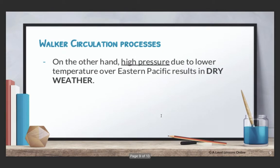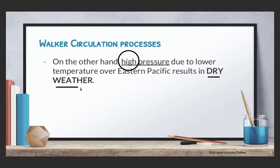On the other hand, as for the eastern Pacific, there's actually high pressure. High pressure is there because there is low temperature, and this low temperature is because of the cold ocean currents. This results in dry weather — high pressure is always associated with dry weather. Just imagine yourself when you go up into the sky when you take a plane: you're increasing altitude, which will actually increase the pressure, which is why you need to pop your ears, and you realize that your skin and lips start to get very dry.